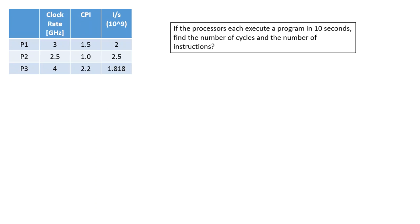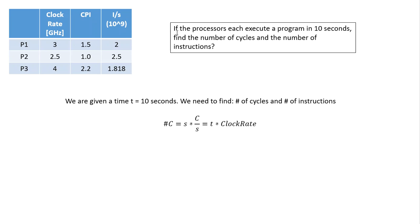Moving to part B, with the instructions per second moved into the table for ease of use. Question B asks: if the processors each execute a program in 10 seconds, find the number of cycles and the number of instructions. Given T equals 10 seconds, number of cycles equals cycles per second times time, and number of instructions equals time times instructions per second.